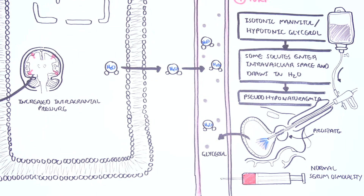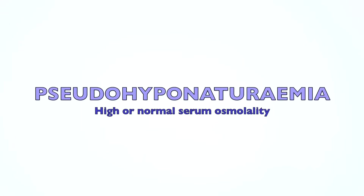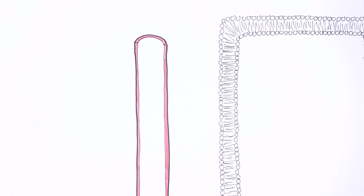The normal osmolality in TURP is perhaps due to the mannitol and glycine leaving the intravascular space quickly. Note that serum osmolality is high or normal in cases of pseudohyponatremia. Most true causes of hyponatremia are associated with a low plasma osmolality, which means a low number of solutes in plasma.